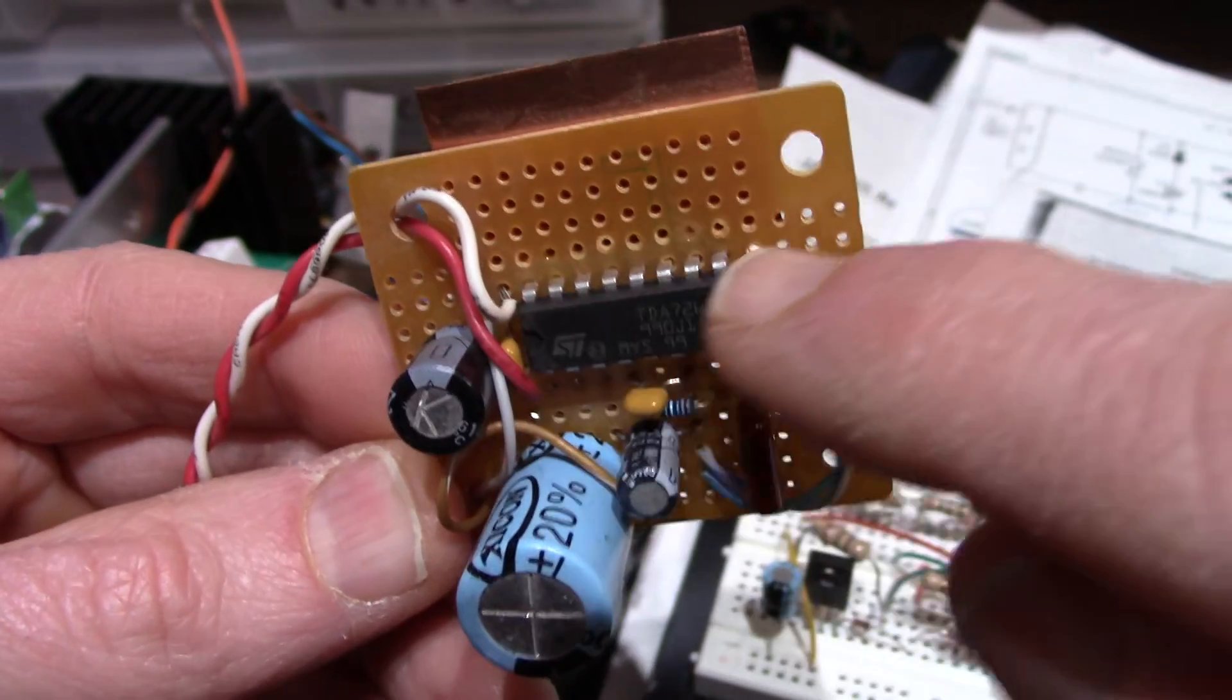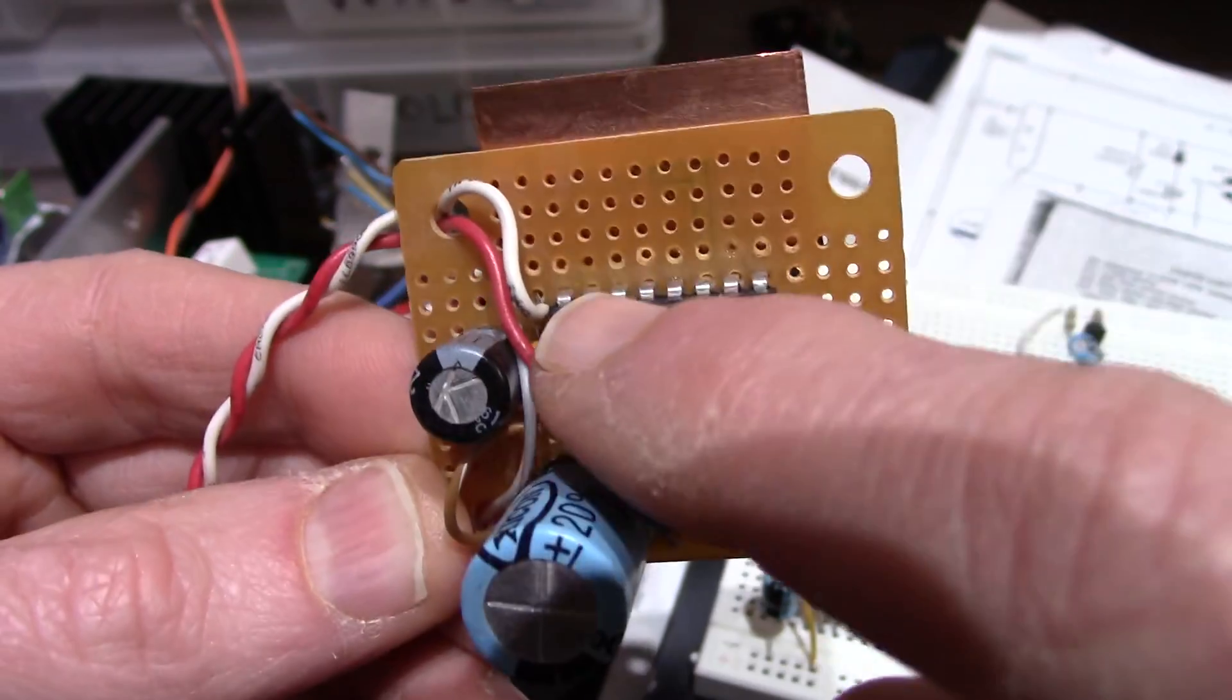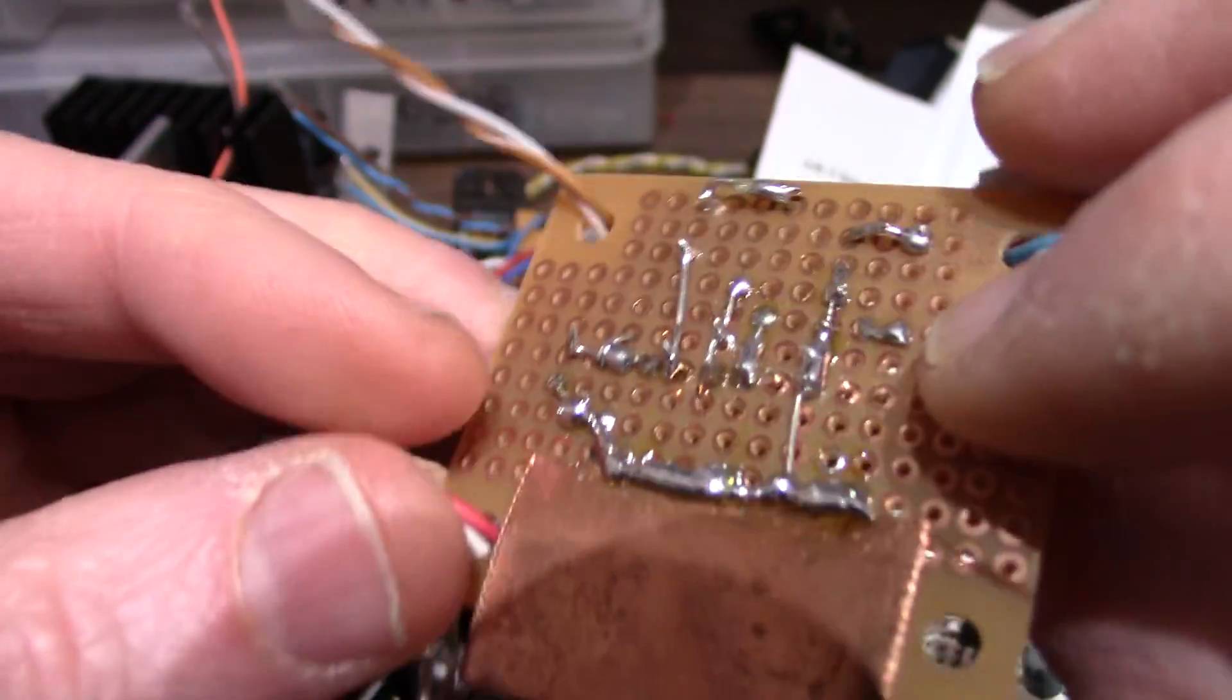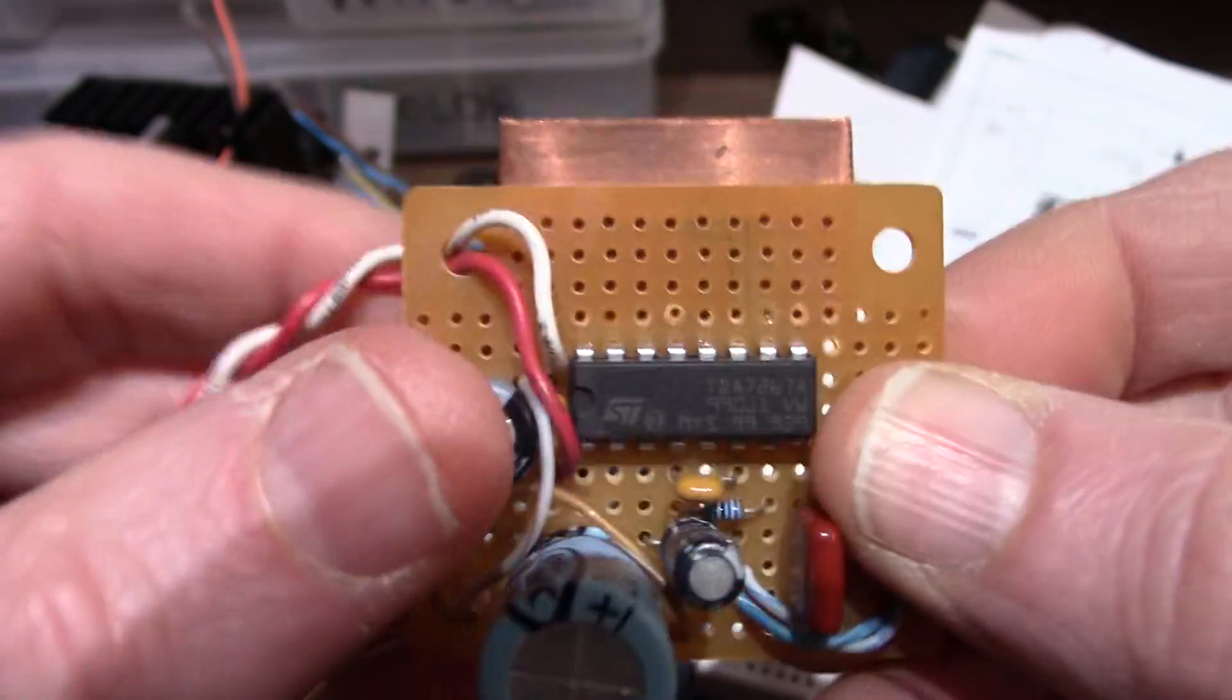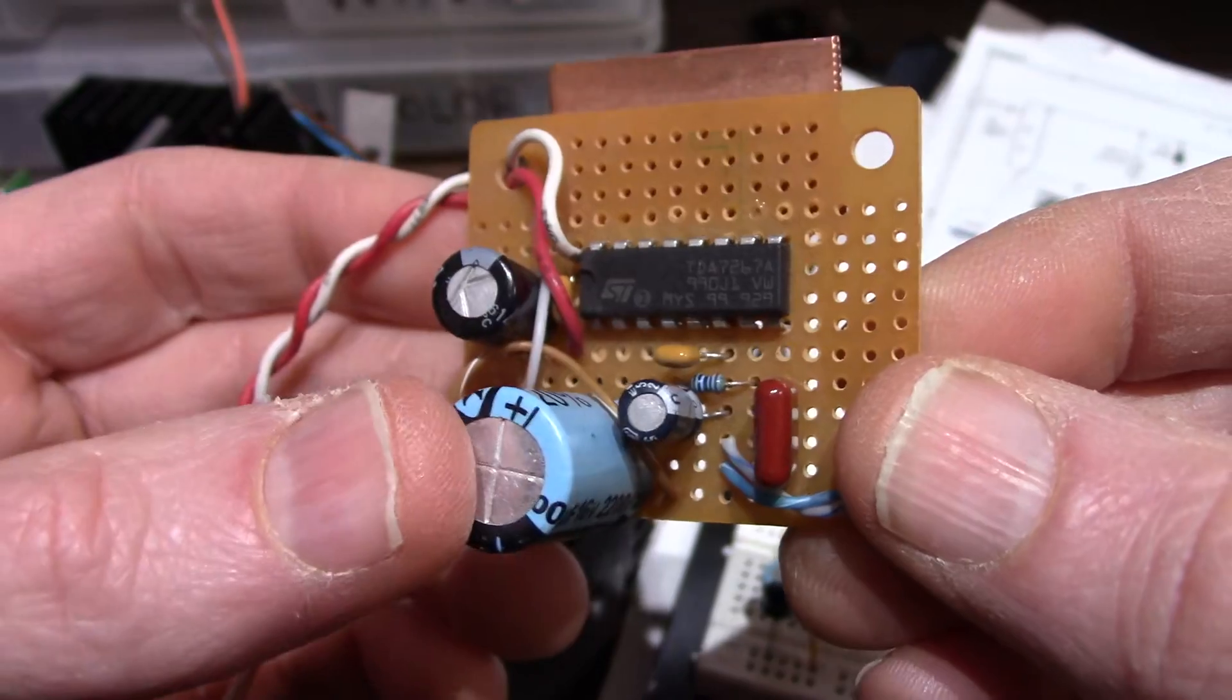All the pins on this side of the package are for heat sinking. They're grounded, used for heat sinking. I have a little copper heat sink on there and we'll test this board on the audio analyzer.